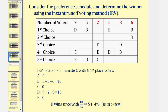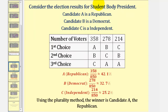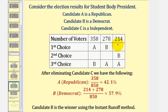Now let's discuss what can go wrong when using the instant runoff method. Instant runoff voting can violate the Condorcet criterion, as we saw in our previous lesson when discussing insincere voting. In that example, using the basic plurality method the winner was candidate A, but a one-to-one comparison showed candidate C, the independent, would win. However, applying the instant runoff method, candidate C has the least first place votes and is eliminated, resulting in the Democrat winning with a majority of 57.9 percent. This is an example of where the instant runoff method can violate the Condorcet criterion.